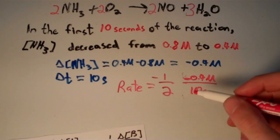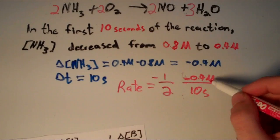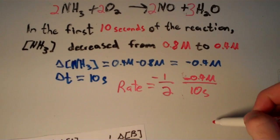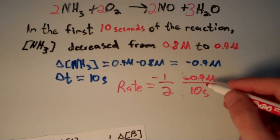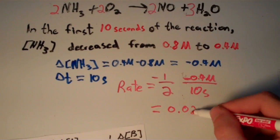So in our equation to determine the rate, we're going to take negative 1 half times negative 0.4 over 10. 0.4 over 10, that's 0.04. And if you take negative 1 half of negative 0.04, you'll get positive 0.02.